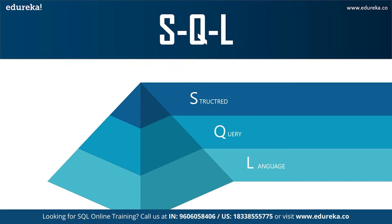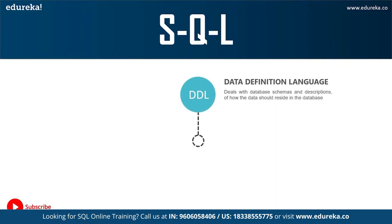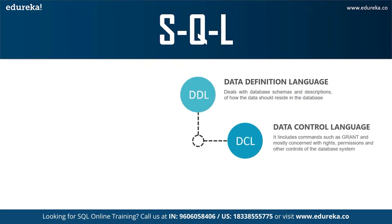SQL is the core of relational databases, used for accessing and managing data. With SQL statements, you can add columns, update or delete rows of data, retrieve information, modify databases, and perform many more actions. The different subsets of SQL commands are: DDL — Data Definition Language — which deals with the description of the database schema and is used to create and modify the structure of database objects, allowing operations such as CREATE, ALTER, and DELETE.